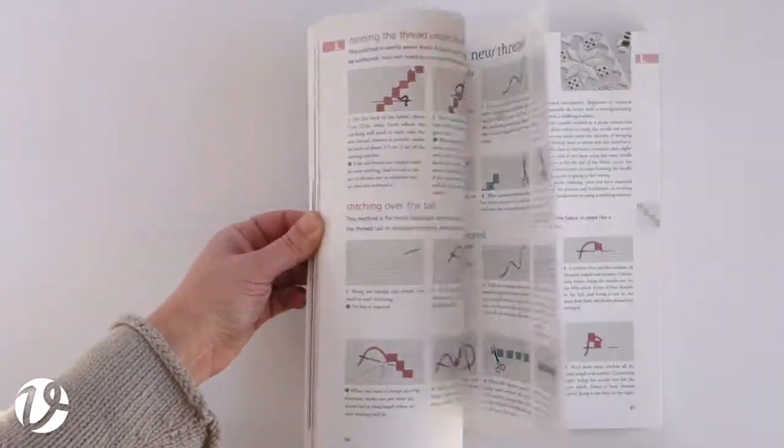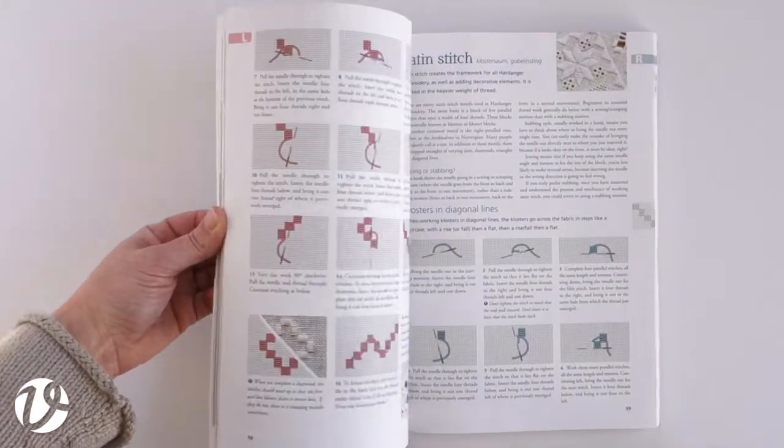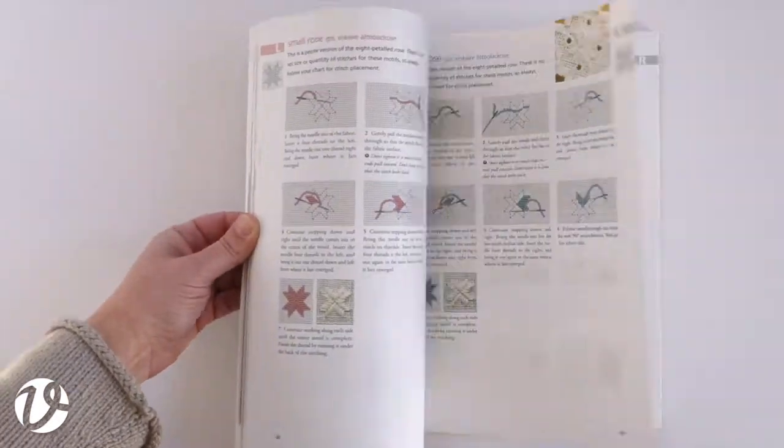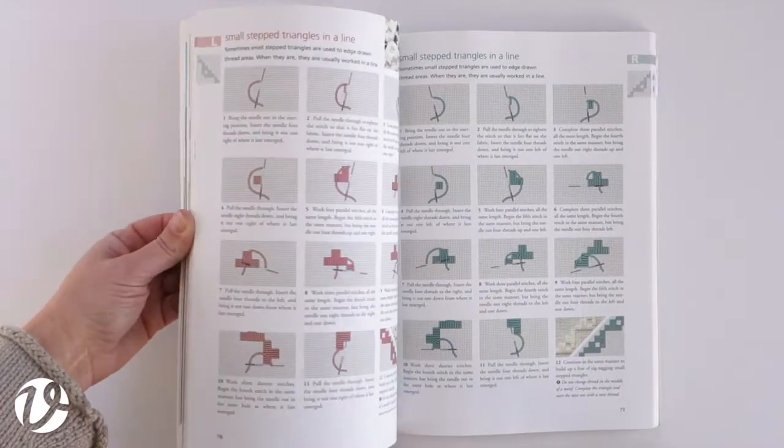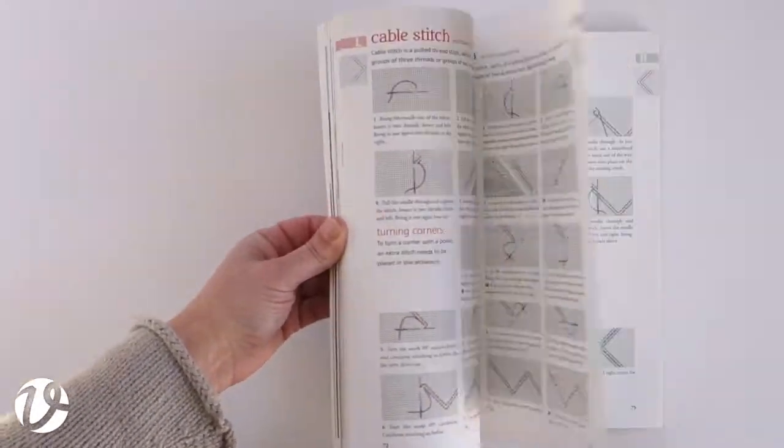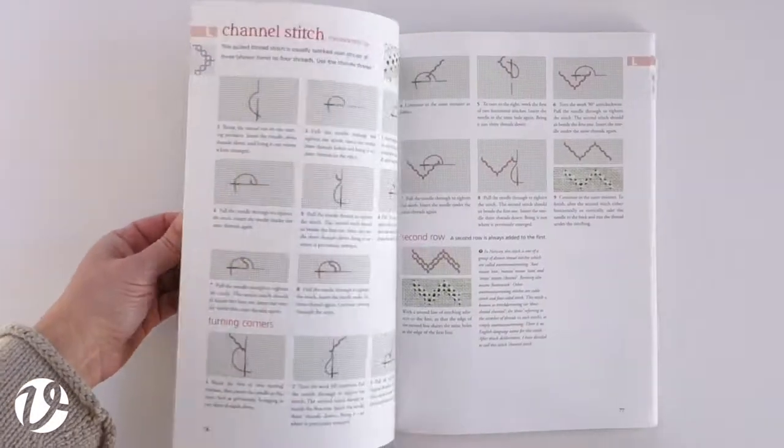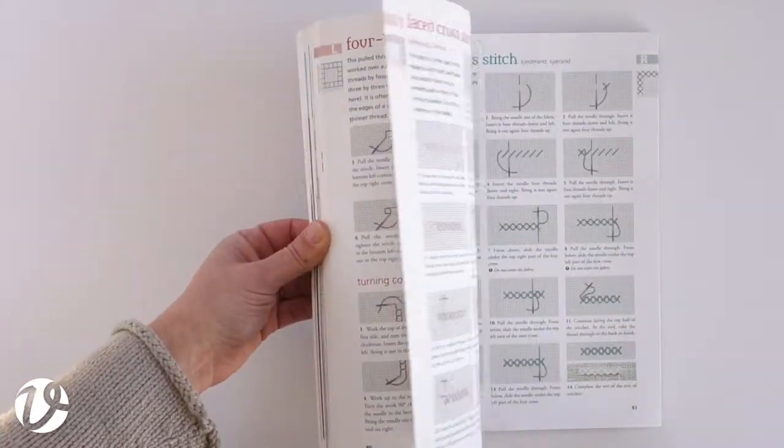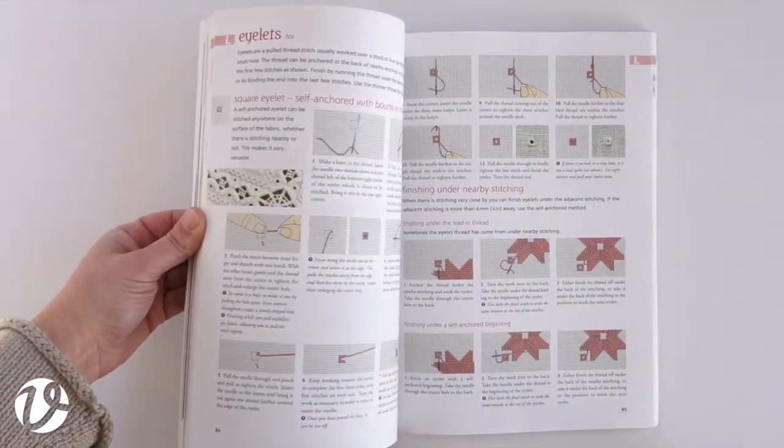The stitch instructions include both left and right-handed step-by-step instructions. In this section of the book there are stitches that you probably won't have seen before, stitches that were part of the old style Hardanger embroidery but have fallen out of contemporary usage.